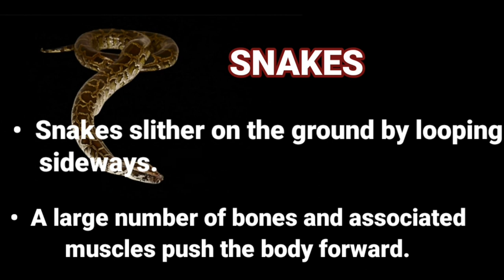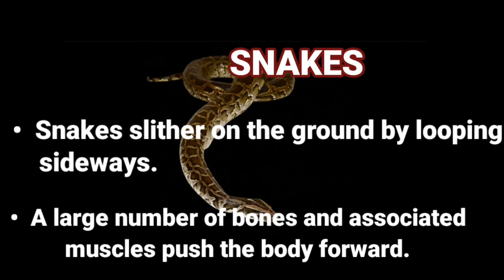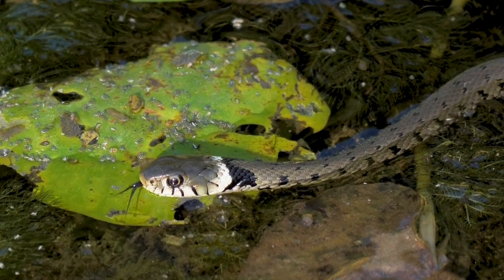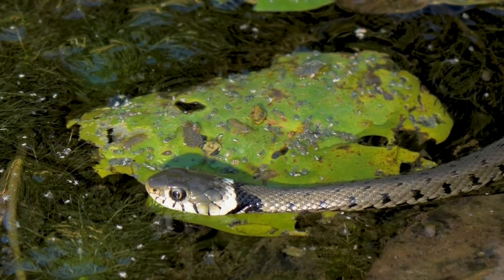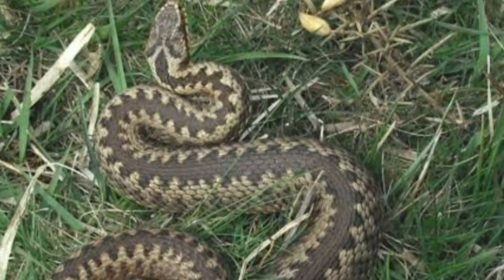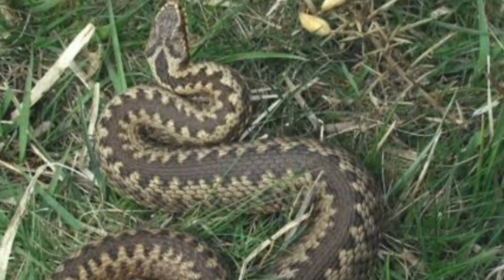Gait of snakes. Snakes have a long backbone and many thin muscles. These are connected to each other even though they are far from one another. The muscles also interconnect the backbone, ribs and skin. It is these interconnected muscles that help them slither. Snakes move in S-shaped loops.